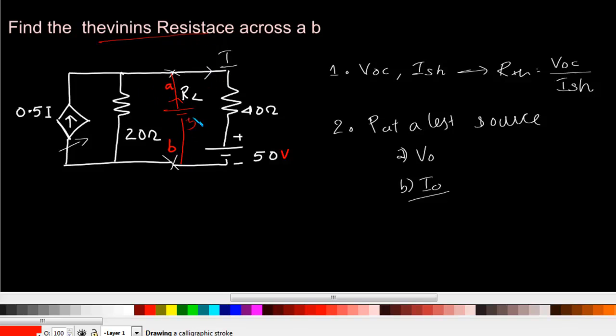Now what we have done by putting this 50 volt source is we have effectively nullified the current flow here, because here we have 50 volt potential, here also we have 50 volt potential. So the current in this direction, or the current I, will be 0. Since this current I is 0 here, this current source will also be 0 or it does not supply any current.